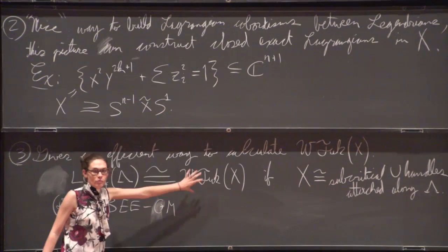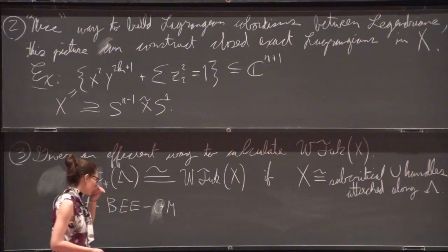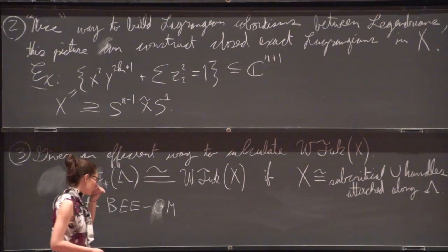They don't mention wrapped Fukaya category at all, or even wrapped homology, but they have these type of isomorphisms, kind of, between the contact world and the symplectic Floer theoretic world.